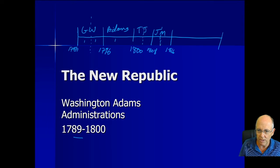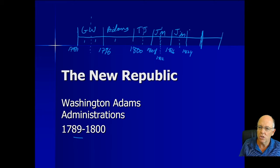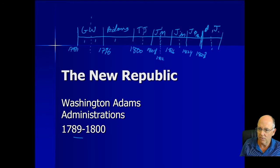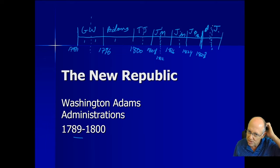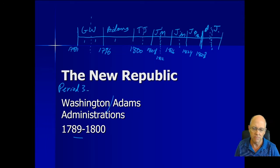By the way, the War of 1812 falls right in the middle of Madison's presidency. Then in 1816, James Monroe gets two terms and goes to 1824. From 1824 to 1828 is one term for John Quincy Adams — he loses the 1828 election. Then two terms for Andrew Jackson. These are the first administrations.